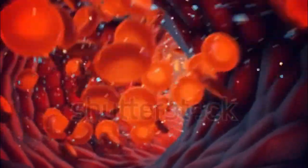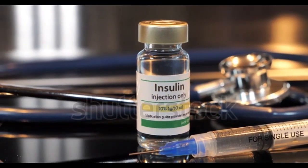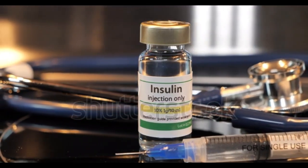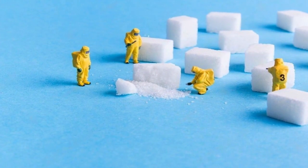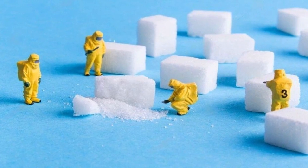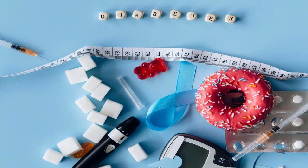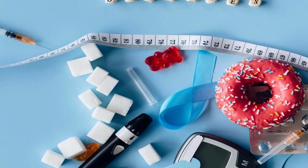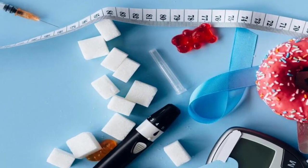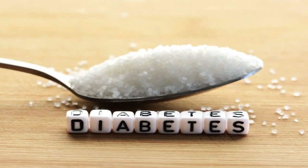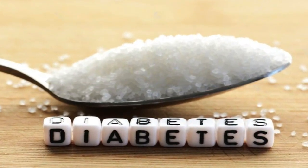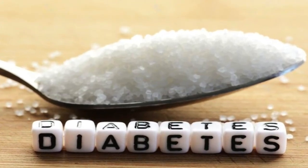Sometimes your body doesn't make enough, or any, insulin or doesn't use insulin well. Glucose then stays in your blood and doesn't reach your cells. Over time, having too much glucose in your blood can cause health problems. Although diabetes has no cure, you can take steps to manage your diabetes and stay healthy. Sometimes people call diabetes a touch of sugar or borderline diabetes. These terms suggest that someone doesn't really have diabetes or has a less serious case, but every case of diabetes is serious.